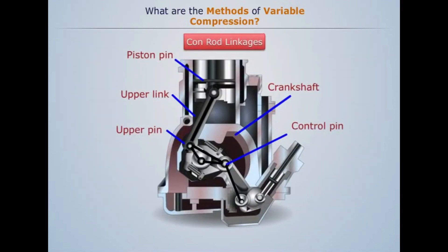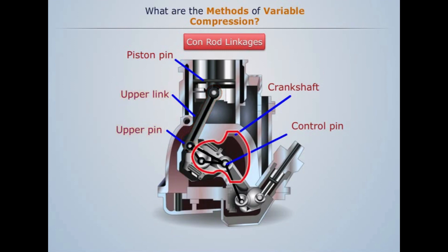Con-rod linkages: A popular approach has been developed to replace the conventional con-rod with a two-piece design in which an upper member connects with the piston while a lower member connects with the crankshaft. The shorter crank operates through a linkage which is anchored by an eccentric rotary actuator.